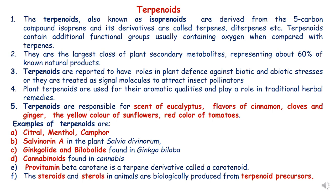What are terpenoids? Terpenoids are also known as isoprenoids and they are derived from the 5-carbon compound isoprene. Their derivatives are called terpenes, diterpenes, etc. Terpenoids contain additional functional groups usually containing oxygen when compared with terpenes. Terpenoids are the largest class of plant secondary metabolites, representing about 60% of known natural products.